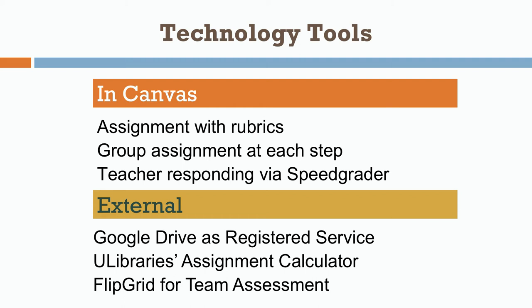You can also use external tools. Google Drive can be a registered service within Canvas so that students can share a folder in which they keep drafts of their work, or a group can share a folder where you can see their meeting notes as well as their final assignments. The University Libraries provides an assignment calculator that students and you can use to plan out the stages and resources needed for longer summative assignments. Flipgrid can also be used as a way for teams to offer final evaluatory feedback when they wrap up a project — a great fast way for teachers to respond to groups as a whole and offer individual feedback.